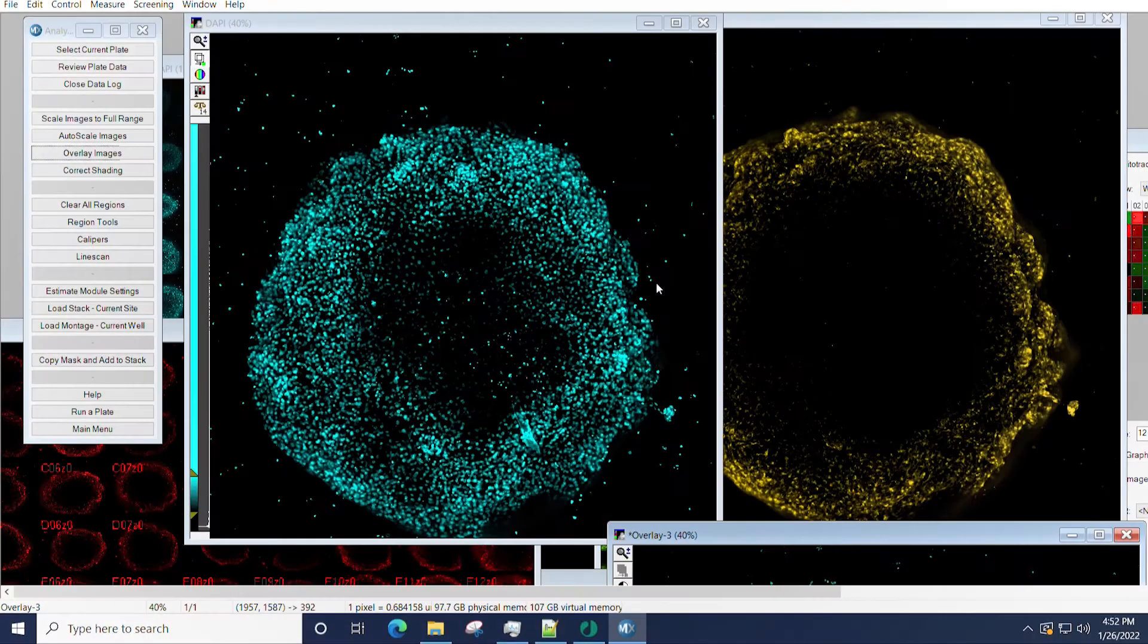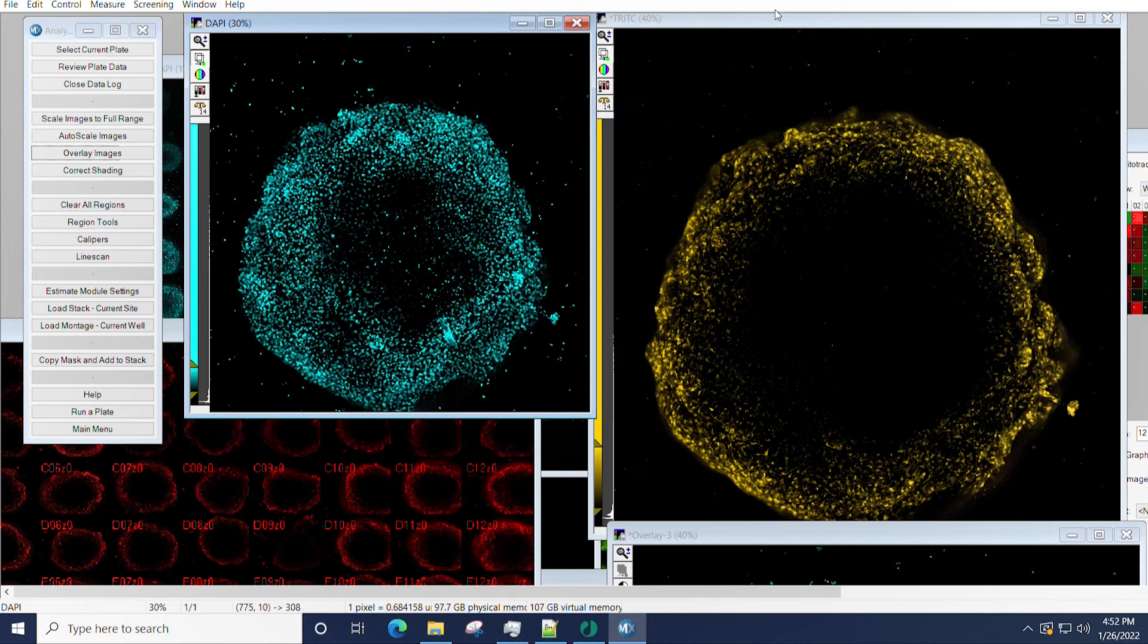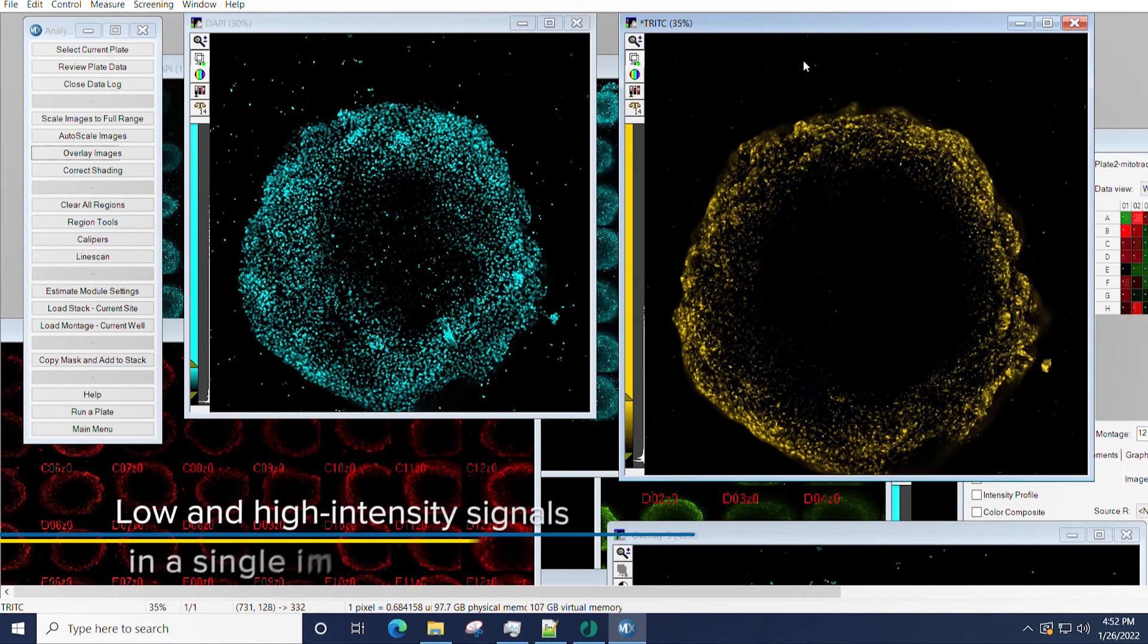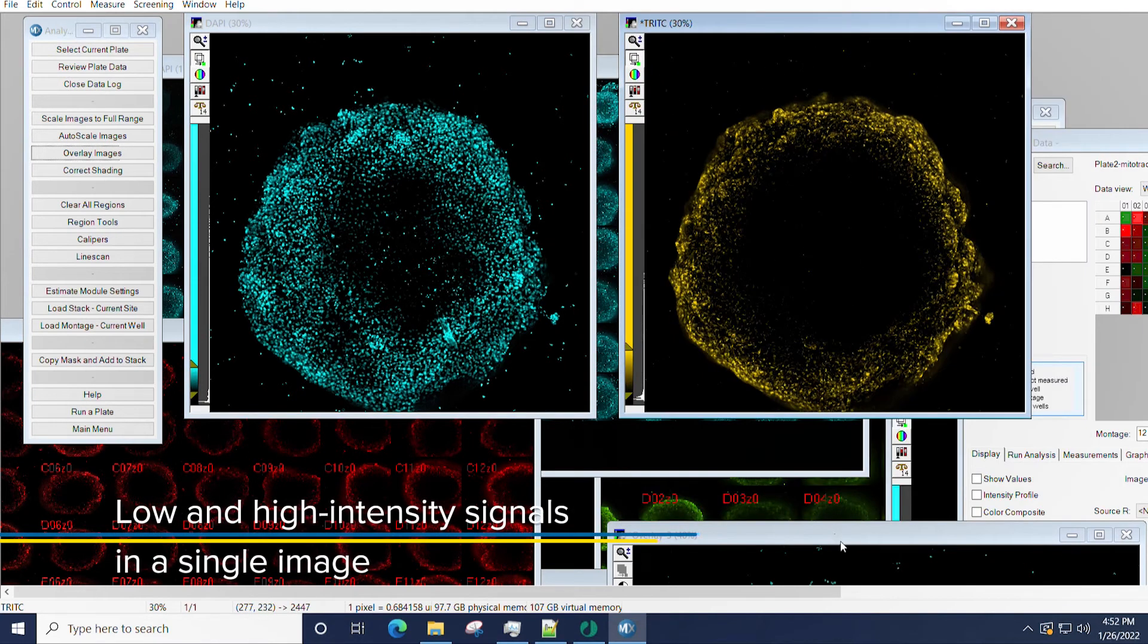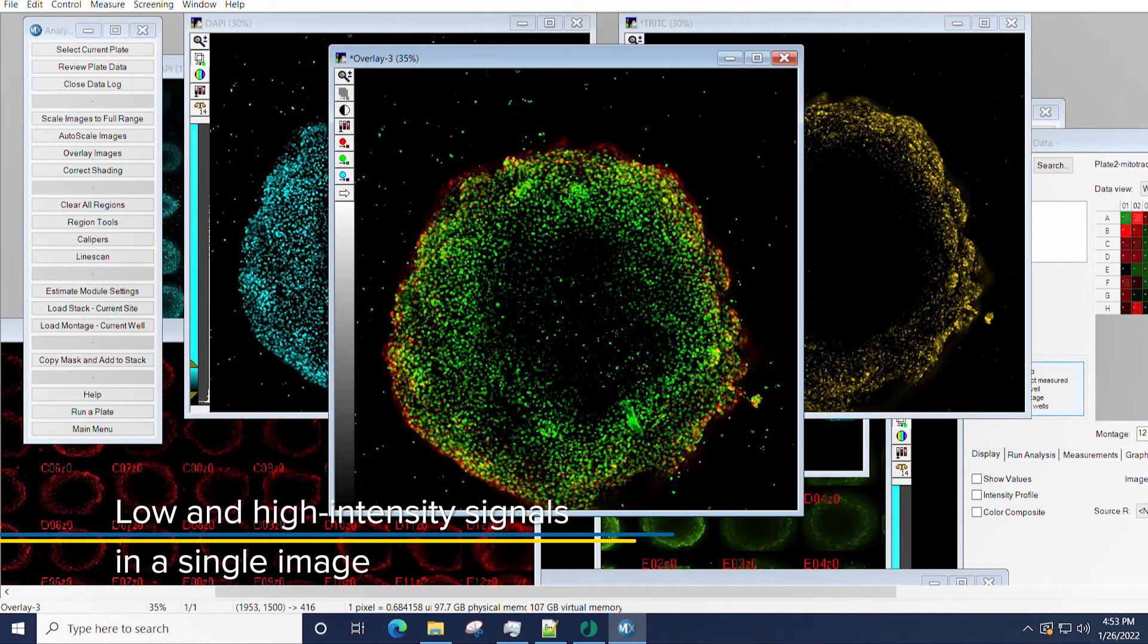Using a high-intensity light source enables researchers to quantify low- and high-intensity signals in a single image, detecting a greater than 3-log dynamic range intensity.